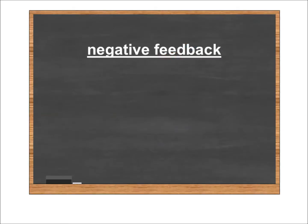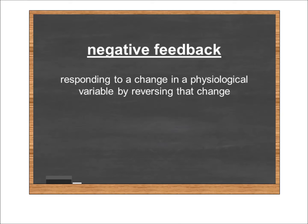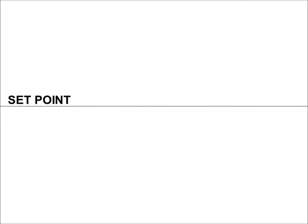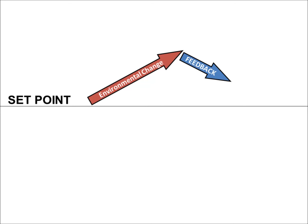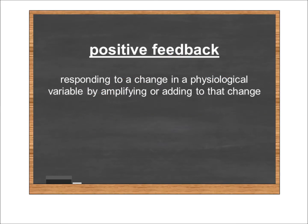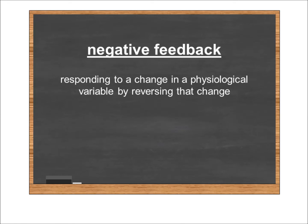The opposite of positive feedback is negative feedback, which doesn't add to the change — it subtracts from it or reverses the initial change. Whatever we start with, negative feedback does the opposite. If we have our generic variable at set point and the environment causes the value to go up, negative feedback would cause the value to come back down. If the initial change was a decrease, negative feedback would make the value come back up. Positive feedback isn't good; negative feedback isn't bad. Positive feedback takes whatever the change was initially and adds to it. Negative feedback takes whatever the change was initially and reverses it.